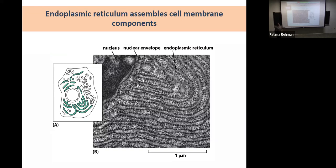The endoplasmic reticulum is really cool — it's made of membranes folded on top of each other with spaces between them where specialized tasks happen. Some ER is directly connected to the nuclear membrane, almost like an extension of it. It probably takes up the largest area within the cell outside the central vacuole in plant cells, and it's a major site for assembly of cell membrane components — proteins and lipids.